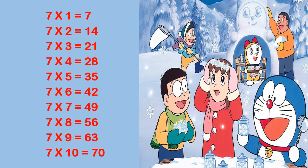Let us revise the table of 7. 7 1s are 7. 7 2s are 14. 7 3s are 21. 7 4s are 28. 7 5s are 35. 7 6s are 42. 7 7s are 49. 7 8s are 56. 7 9s are 63. 7 10s are 70.